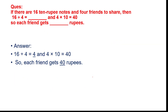Moving to the next page. If there are sixteen ten-rupee notes and four friends to share, then sixteen divided by four equals — and four into ten equals forty — so each friend gets how many rupees? Sixteen ten-rupee notes means sixteen multiplied by rupees ten. When you multiply sixteen by rupees ten, you will get rupees one hundred sixty.